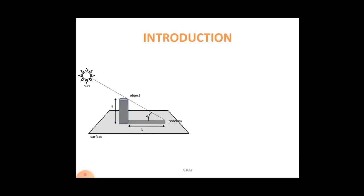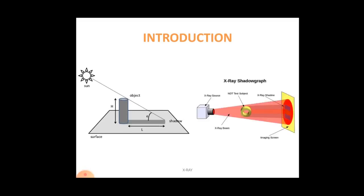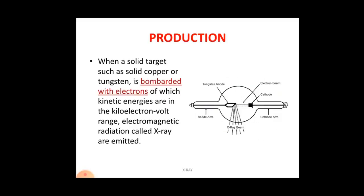Now, how do x-rays work? It is a very simple phenomenon. Sunlight coming from the left side of a screen produces a shadow of an object on the right side. In the same way, whenever x-rays come from the left side and an object is placed between the source and the plate — where the object should be non-destructive, meaning it is used for non-destructive testing (NDT) — you will see the shadow of that object on the plate.